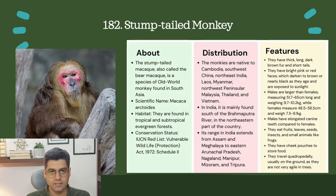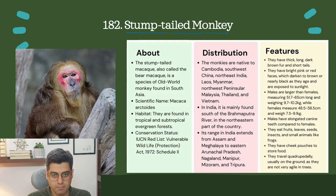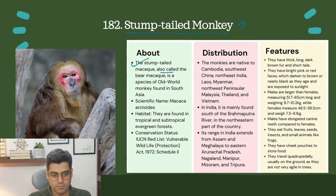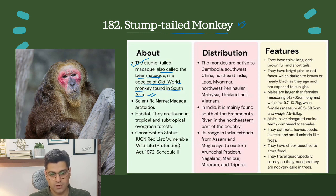The second topic is the Stump-Tailed Monkey. The Stump-Tailed Macaque, also called the Bear Macaque, is a species of Old World Monkey found in South Asia. The scientific name is Macaca arctoides.